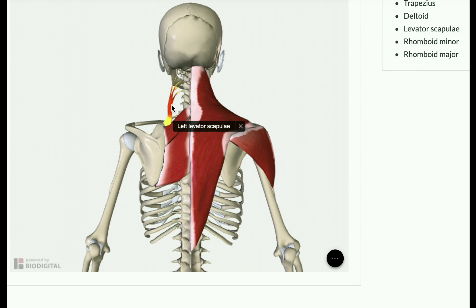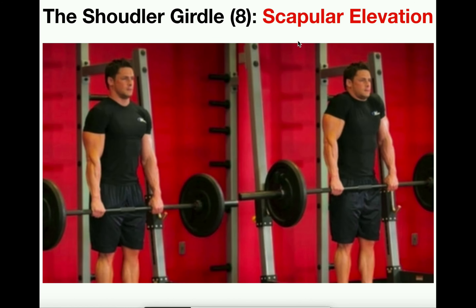The levator scapulae is shown here, originating on different cervical vertebrae near the base of the skull at the occipital bone and inserting on the top aspect of the scapula. The levator scapulae runs slightly at an angle, but the vast majority of the muscle is oriented vertically. This is why when it pulls the scapula toward its origins, it's mostly pulling upward — which is why the levator scapulae is involved in scapular elevation. There is a slight horizontal component that produces minor scapular retraction.